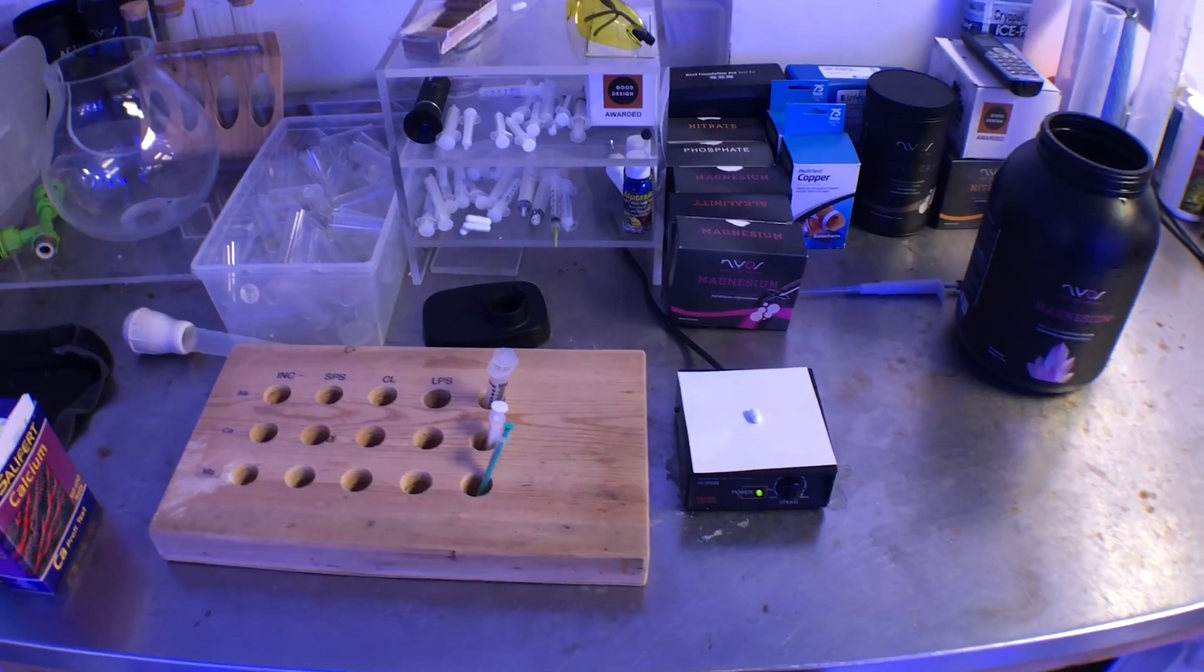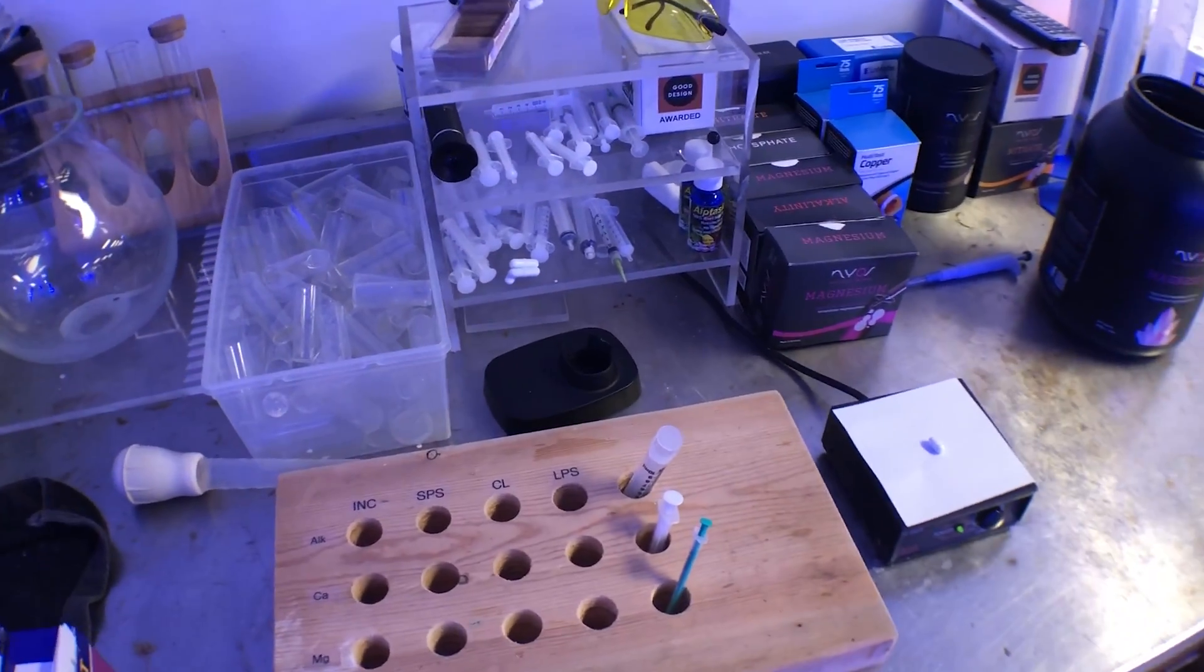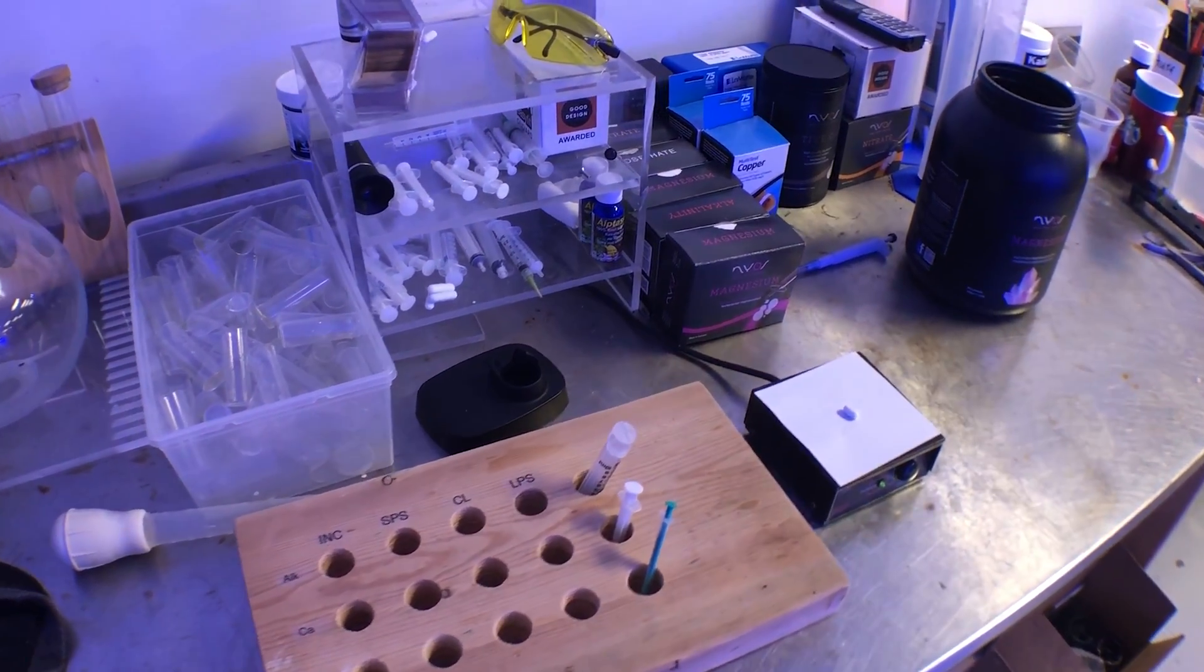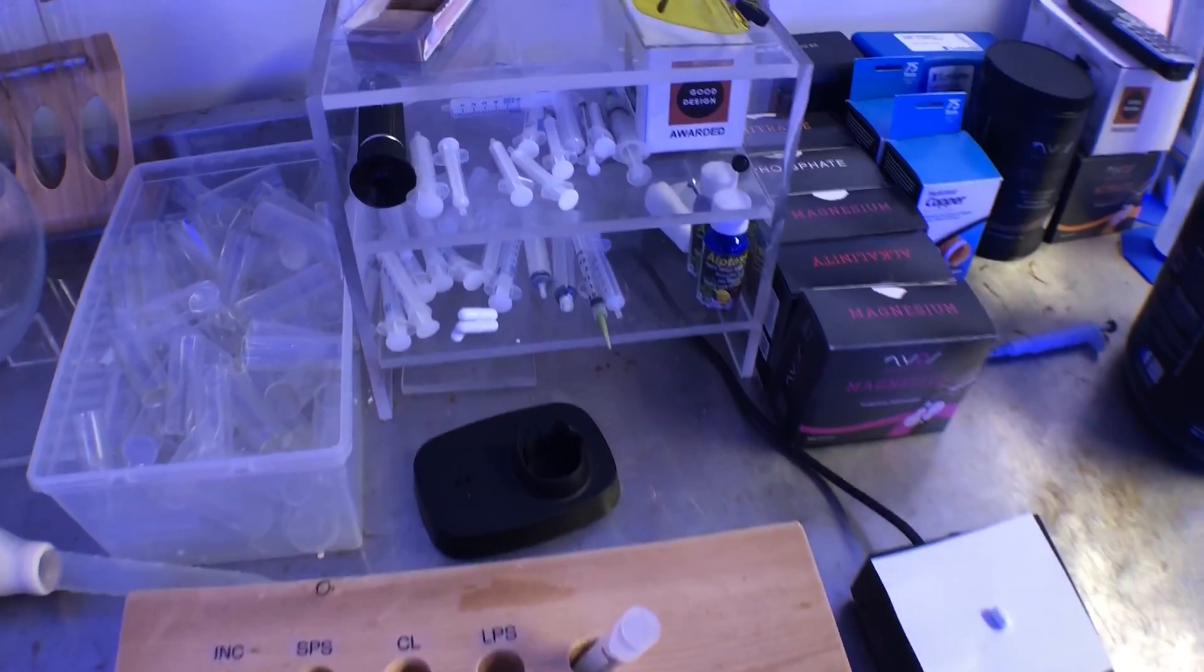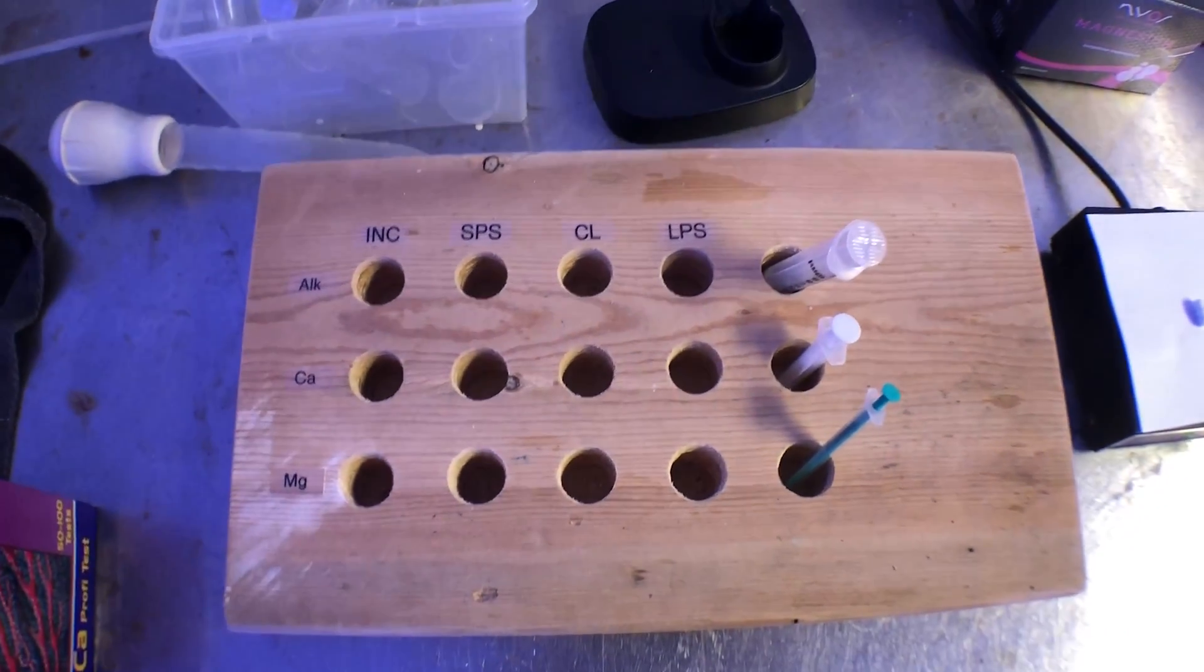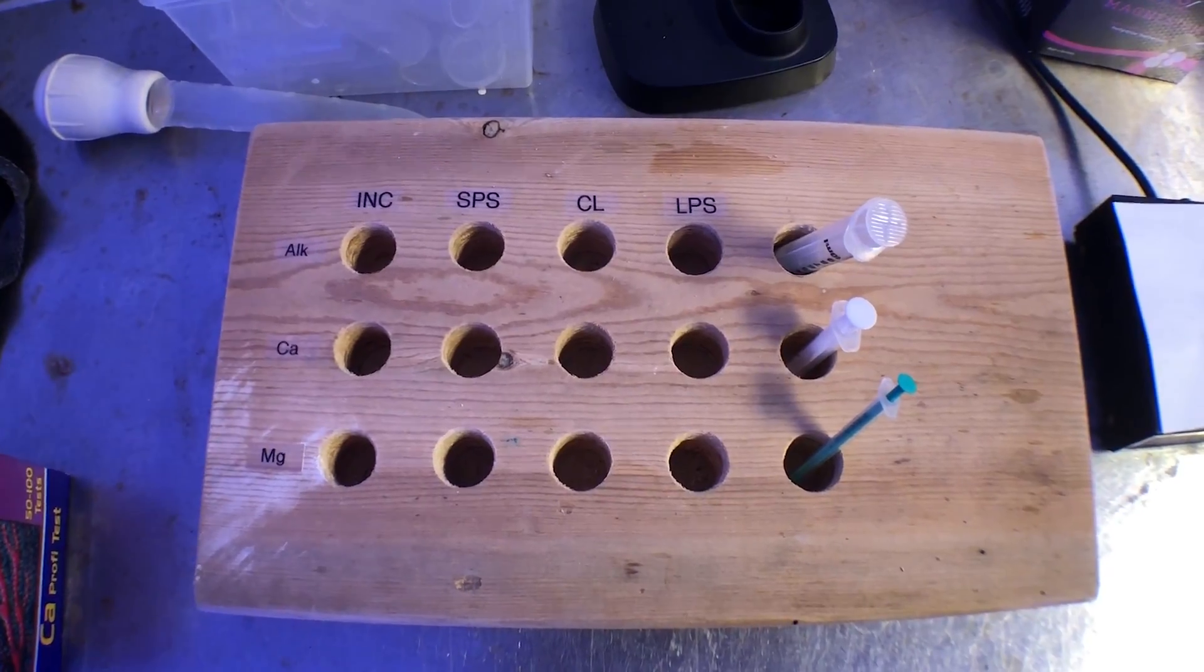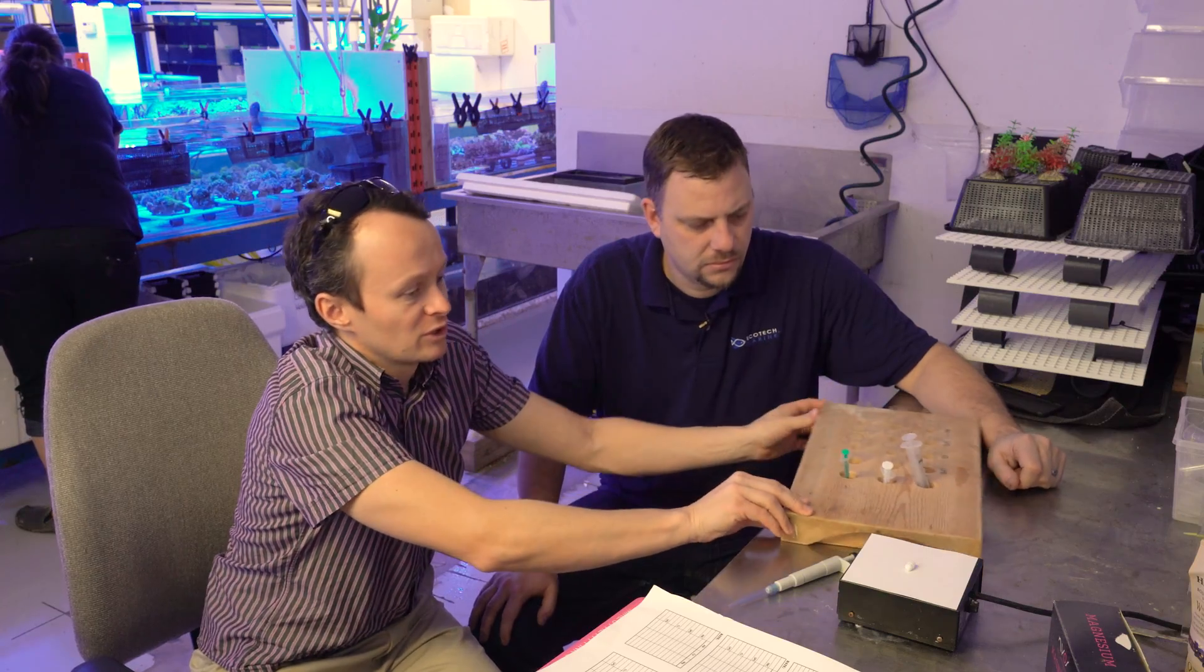We have all of our test kits in one area right up here. We keep a spare on hand at all times so we never run out of any specific test kit. And we have our super low tech and kind of ghetto 2x12 here that we drilled some holes in and we take our samples from each system and the corresponding syringes and we bring it over here and we put it on the magnetic stirrer.